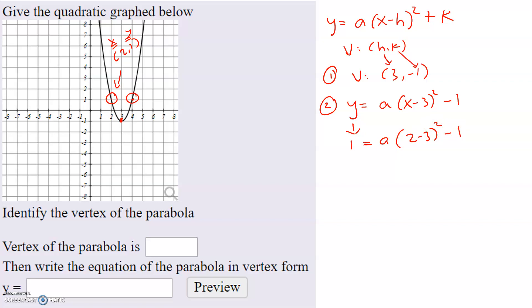Let's go ahead and keep simplifying this. We have 1 equals a times negative 1 squared minus 1. This gives us 1 equals negative 1 squared is 1. So that's going to be 1a, which is a minus 1. And then if I just add 1 to both sides, then I get a equals positive 2.